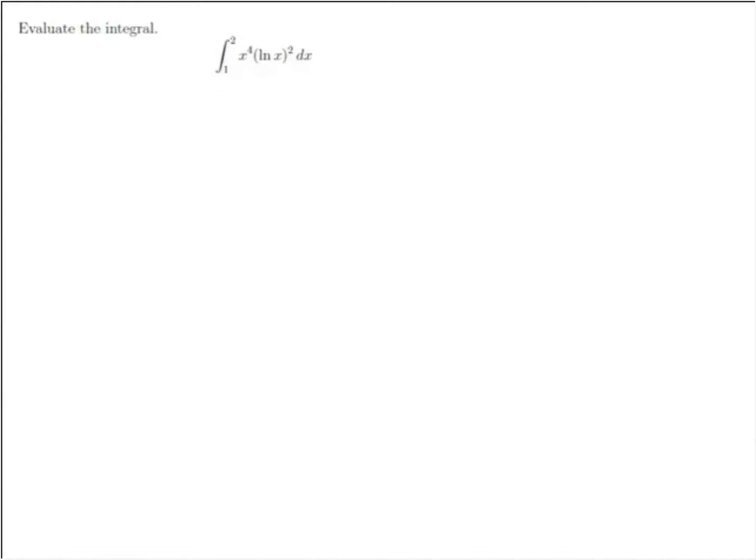Evaluate the definite integral of x to the fourth times natural log of x squared, as x goes from 1 to 2. We're going to use integration by parts.